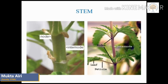Stem. The stem is the main part of the shoot system. It bears leaves, branches, buds, flowers, and fruits. The stem can be short or long. The stem grows above the soil from the plumule. The stem acts like a plant's plumbing system, which conducts water and nutrients from the roots and distributes food in the form of glucose from the leaves to other parts of the plant. There are nodes on a stem where leaves come out. The part of a stem between two nodes is called the internode. The tip of the stem is called the bud.